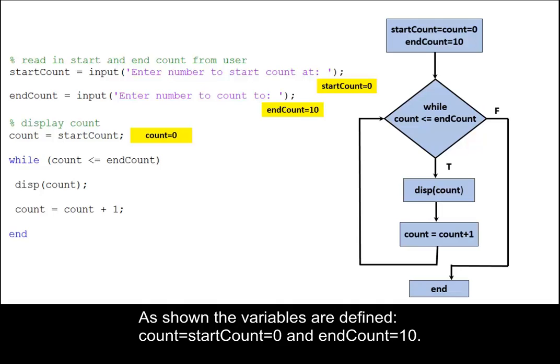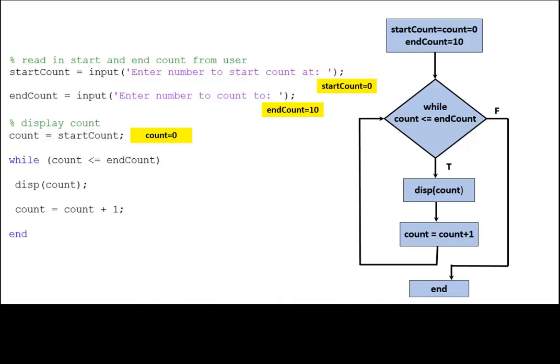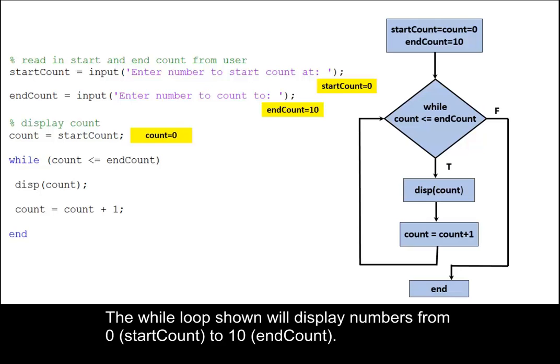As shown, the variables are defined: count equals startCount equals zero, and endCount equals ten. The while loop shown will display numbers from zero to ten.